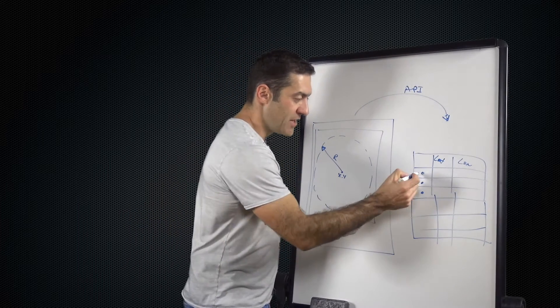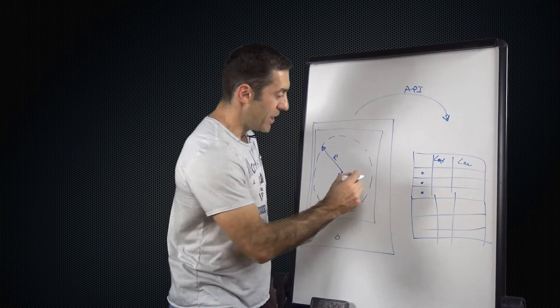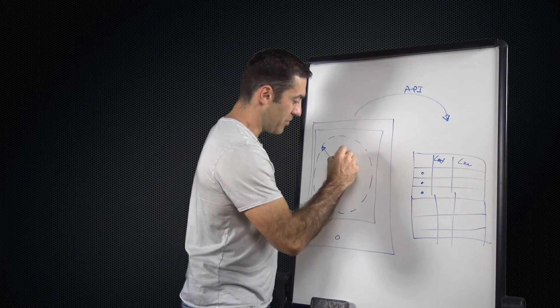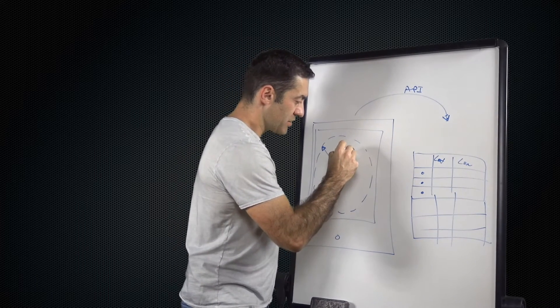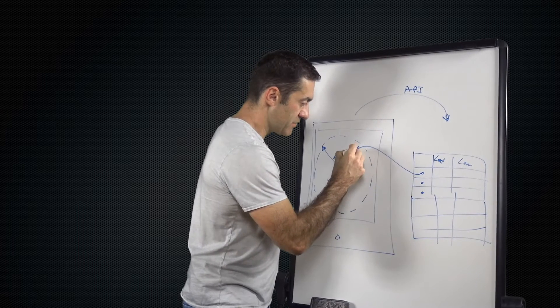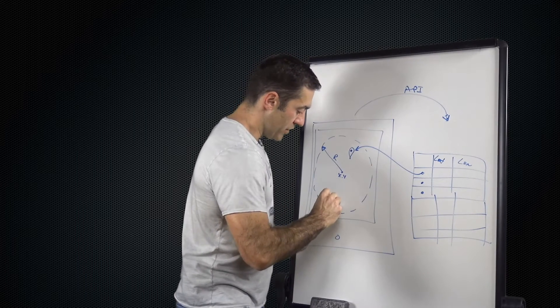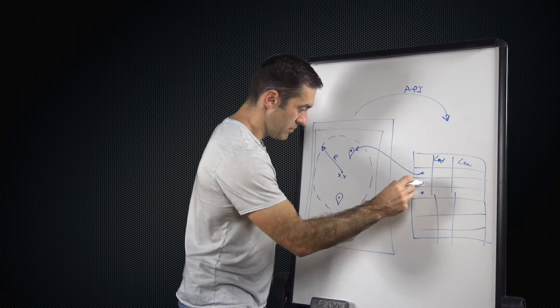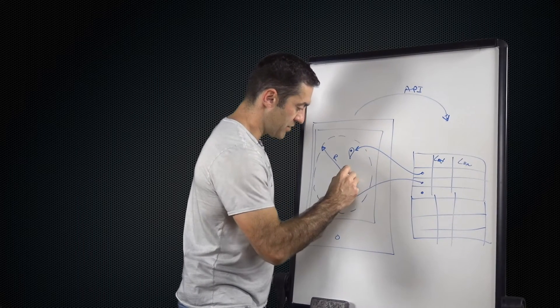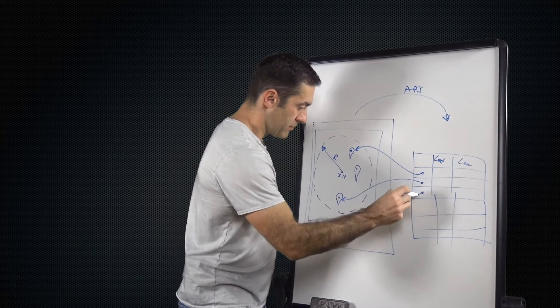So these three points are returned back to the application, and they can be plotted on the map. So we have, this is point one, let's say this guy right here. There is a point two, this guy. And then there is a point three, this guy.